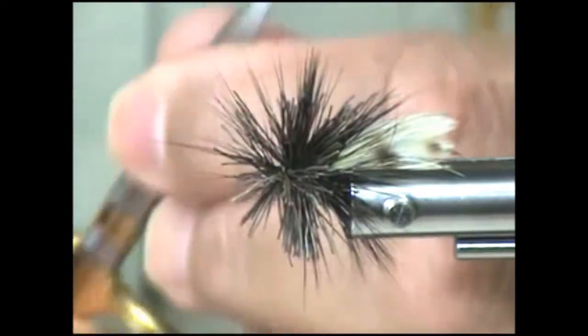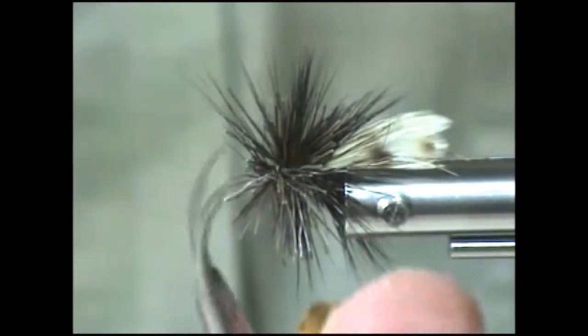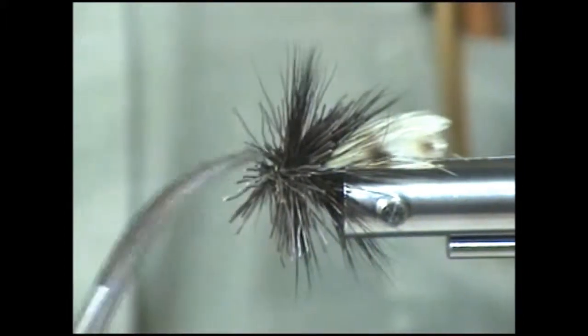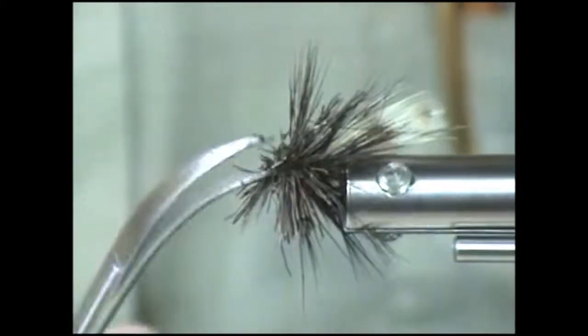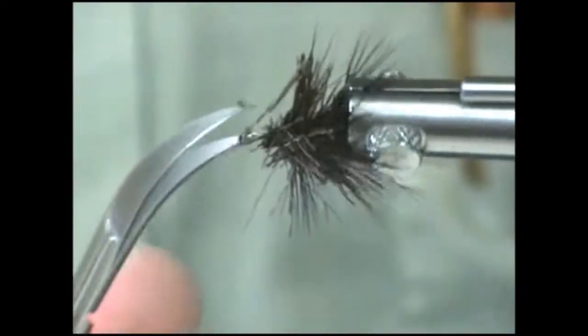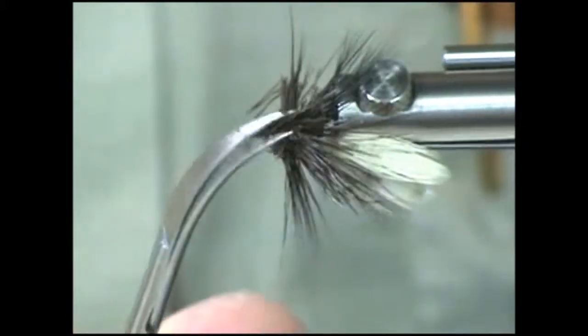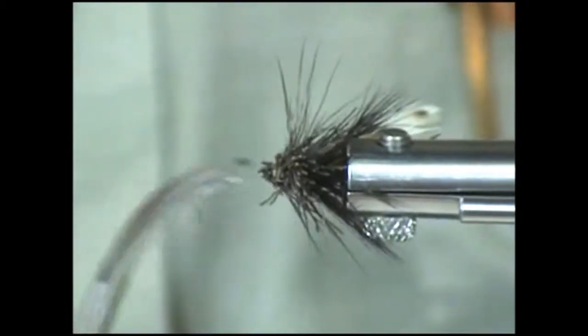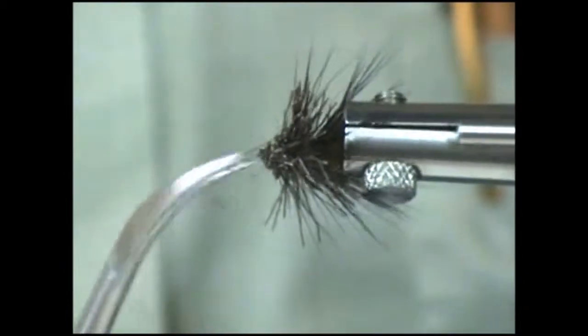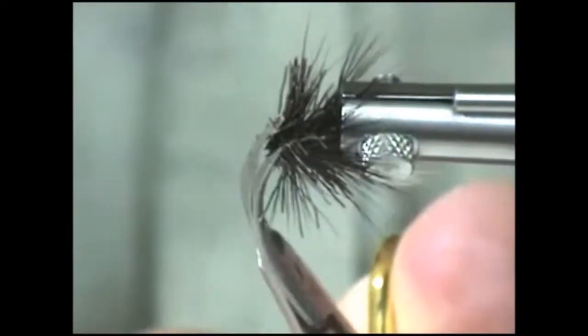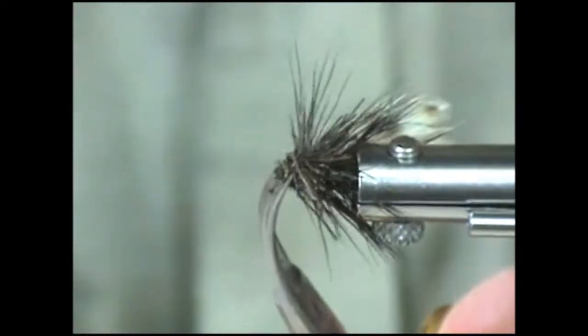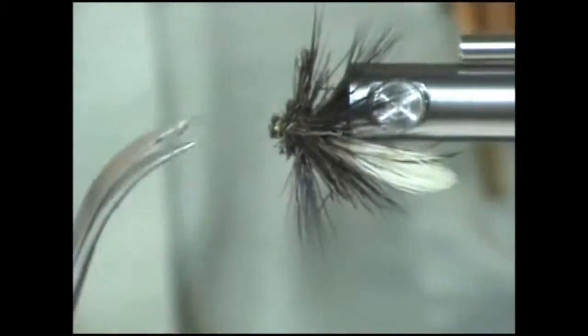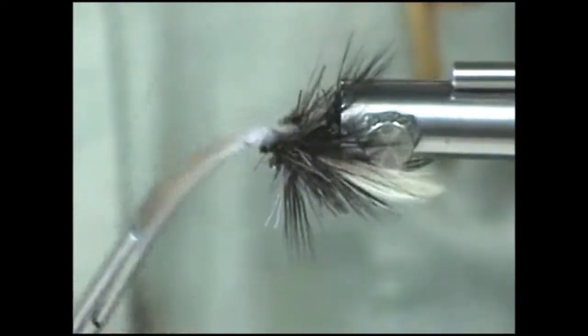Now we're going to start to trim this up. What you want to do is make sure that when you go to trim this, you're just trimming off a little at a time because you can always cut it off but you can't put it back on. Now I'm working around the eye of the hook here. Make sure we get that exposed. Then we're going to come in at an angle here.